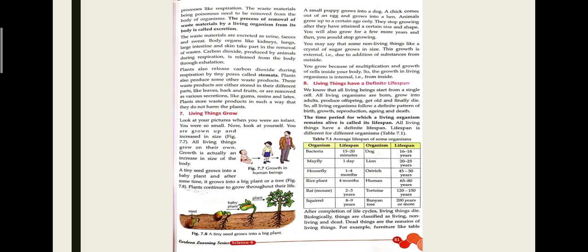Now, how do plants remove their waste material? It is done through stomata — small pores present in the leaves where exchange of gases takes place. Waste products in plants are either stored in their different parts like leaves, bark, and fruits, or removed as various secretions like gums, resins, and latex. Plants store waste products in such a way that they do not harm the plant.